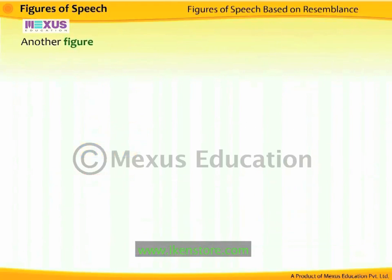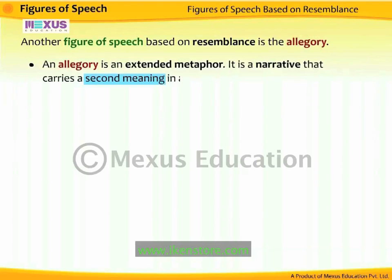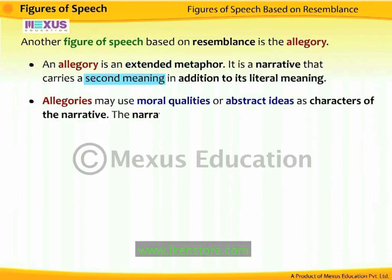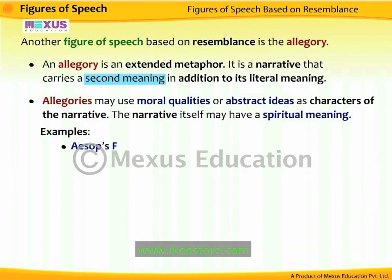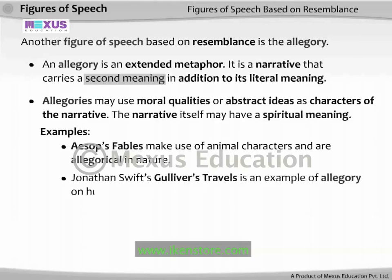Another figure of speech based on resemblance is the allegory. An allegory is an extended metaphor — a narrative that carries a second meaning in addition to its literal meaning. Allegories may use moral qualities or abstract ideas as characters, and the narrative itself may have a spiritual meaning. For example, Aesop's fables use animal characters and are allegorical in nature. Jonathan Swift's Gulliver's Travels is an example of allegory on human nature.